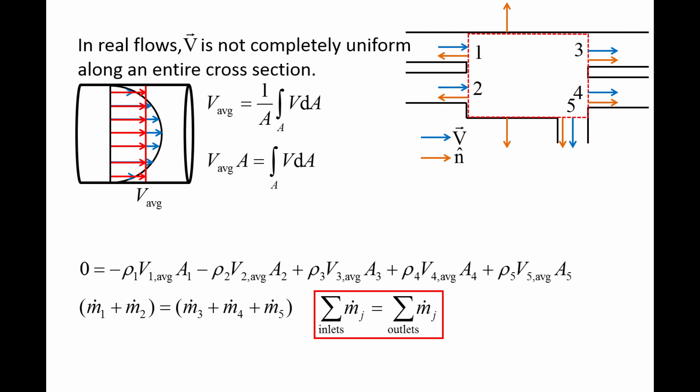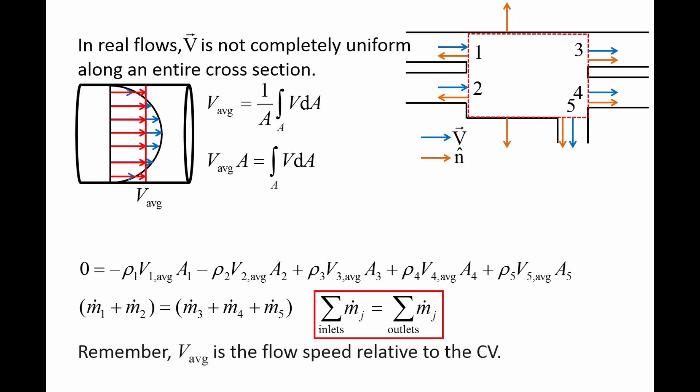This form of the conservation of mass equation is valid for steady flow through a non-deforming control volume, which represents a wide range of engineering devices. When calculating mass flux rates, it is important to remember that v-average is the flow speed as observed from a reference frame attached to the control volume.